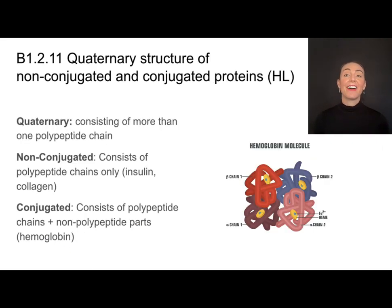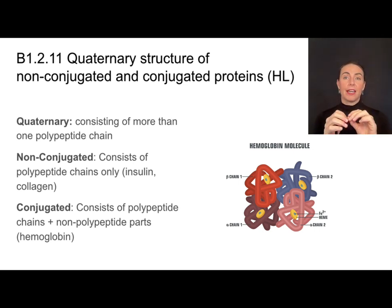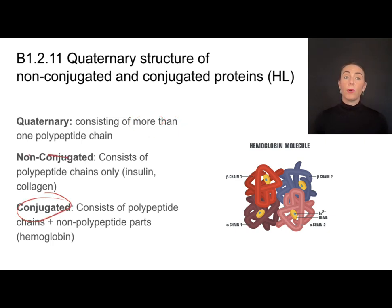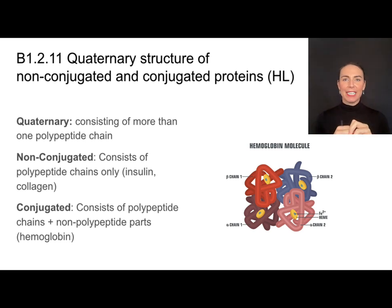Now it's time to get into quaternary structure, which means I don't just have one polypeptide that's intricately folded — I have multiple polypeptides that are all connected together. In order for that protein to be functional, it has to have all of those polypeptide chains put together. Quaternary proteins can either be conjugated or non-conjugated. Non-conjugated means it's just the polypeptide chains — something like insulin or collagen — just pure amino acids folded into their shape.